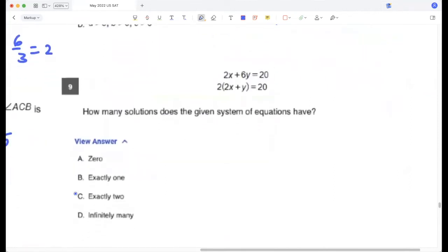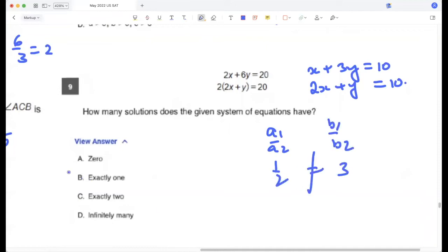How many solutions does the given system of equations have? Okay, so let me just, this can be written as x plus 3y is 10 and this is 2x plus y is 10, right? So this will have, if you do A1 by A2, which is 1 by 2, and B1 by B2, which is 3, they are not equal. So this will have one solution.